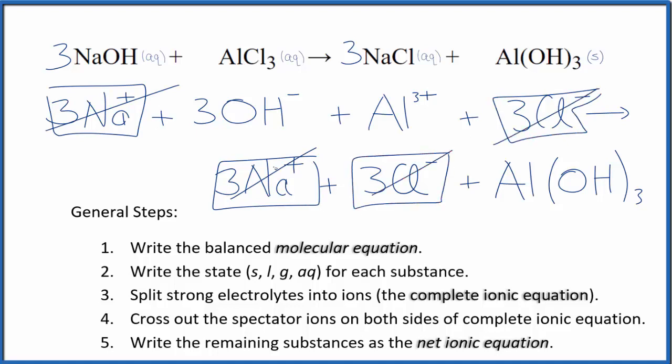and in the products, spectator ions, we cross them out. What's left, that's the net ionic equation for NaOH plus AlCl3. I'll clean it up and write the states. We'll have our net ionic equation.